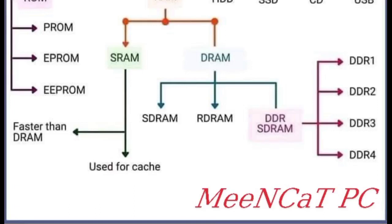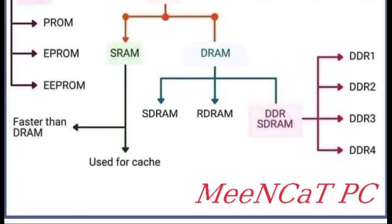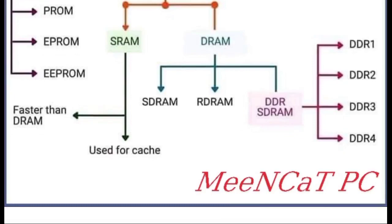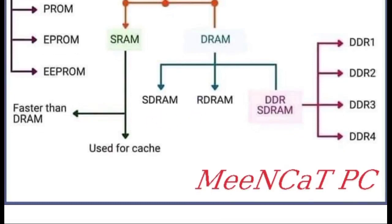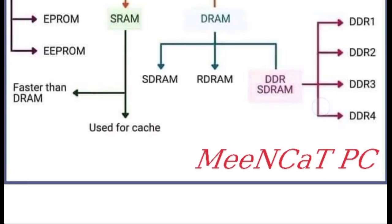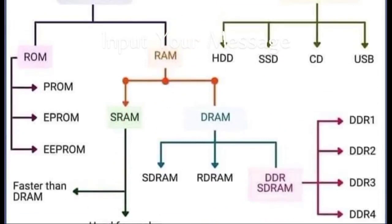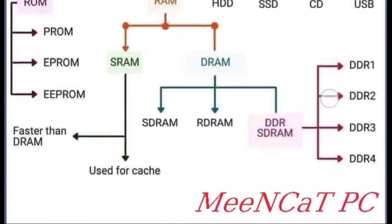DRAM, dynamic random access memory, is divided into three parts: first is SDRAM, second is RDRAM, and third is DDR SDRAM. SDRAM and RDRAM are parts of DRAM, and DDR SDRAM is also a part of RAM.